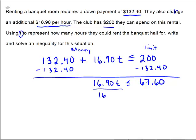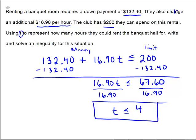Then we'll divide both sides by $16.90, because then I can get T must be less than $67.60 divided by $16.90, and that's T less than or equal to 4. So there's the solution to the problem. The club can rent the banquet hall for less than or equal to 4 hours.